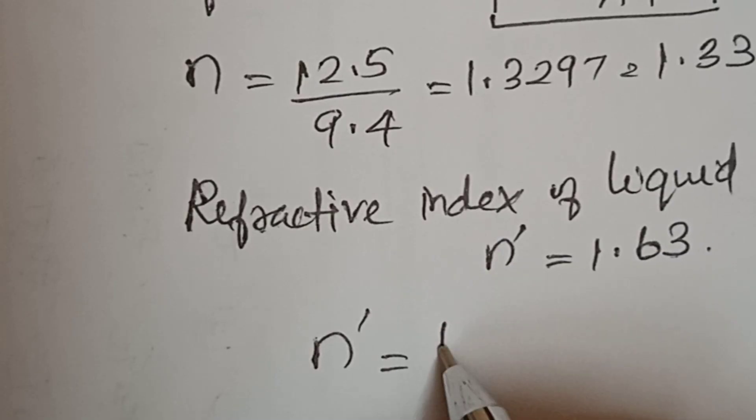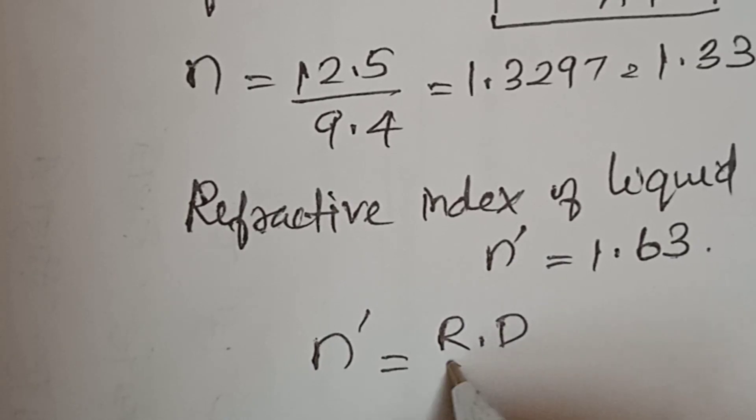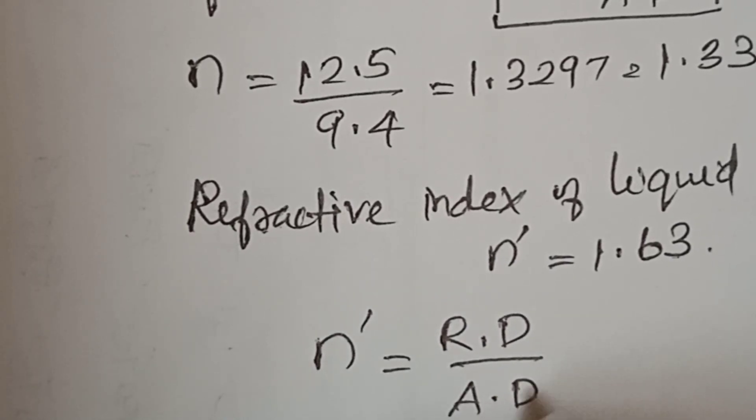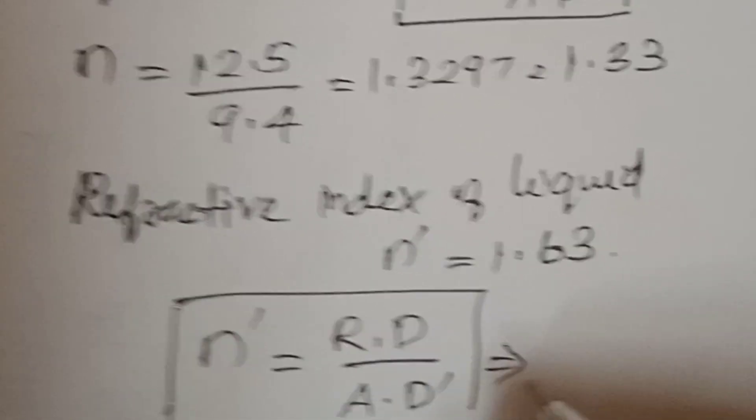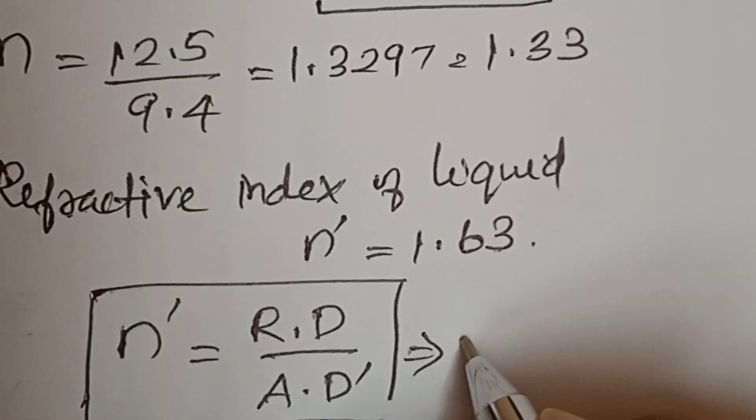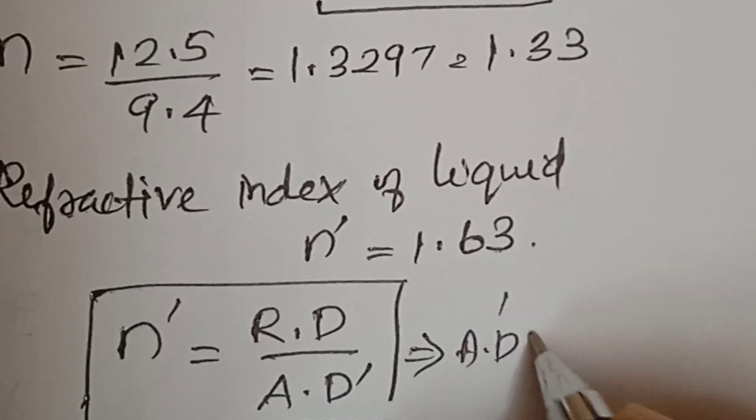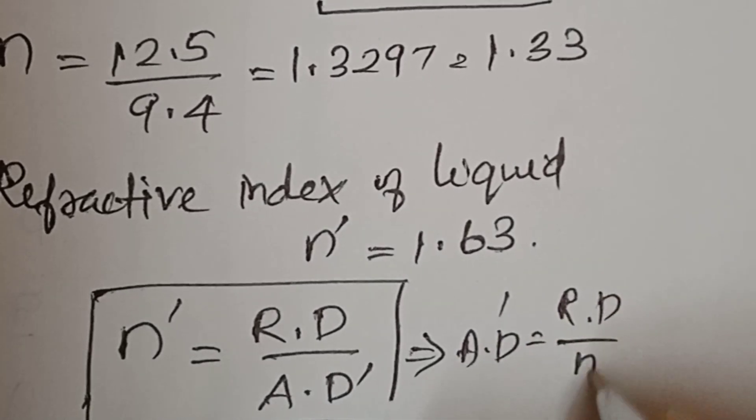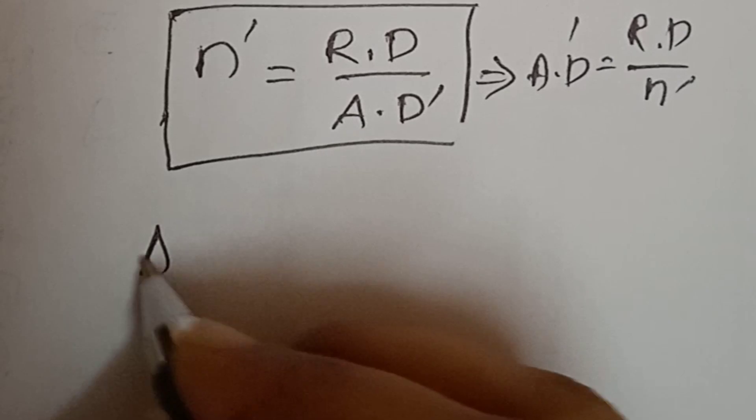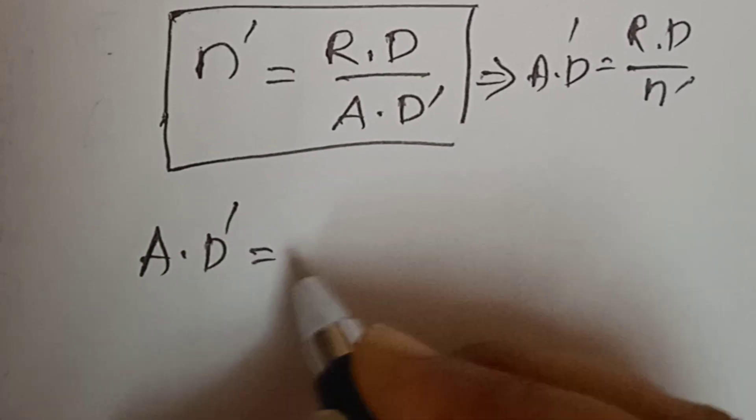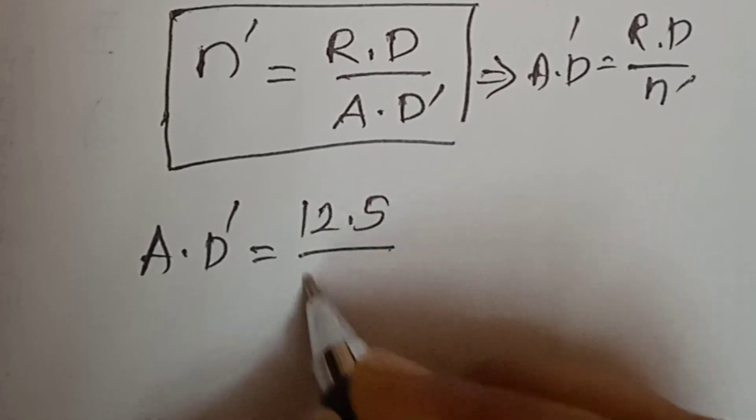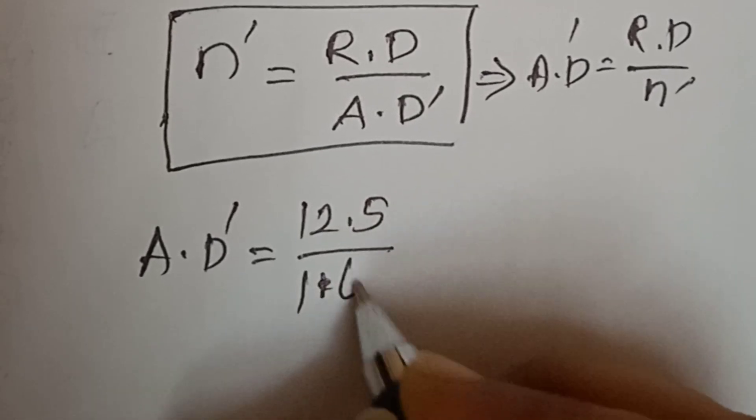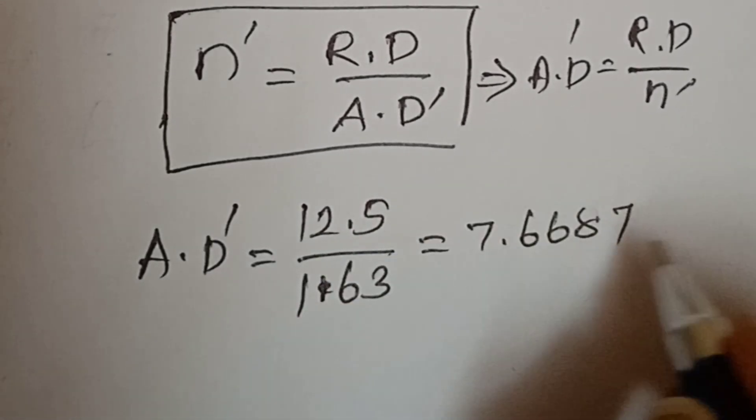Using this formula, the new apparent depth equals 12.5 divided by 1.63, which equals 7.6687, approximately 7.7 cm.